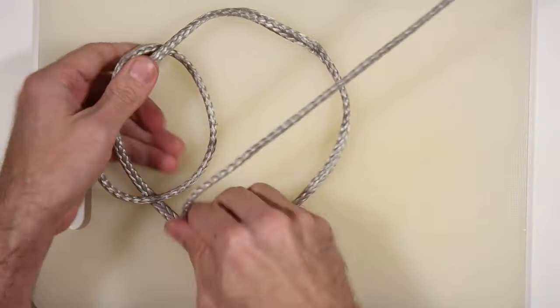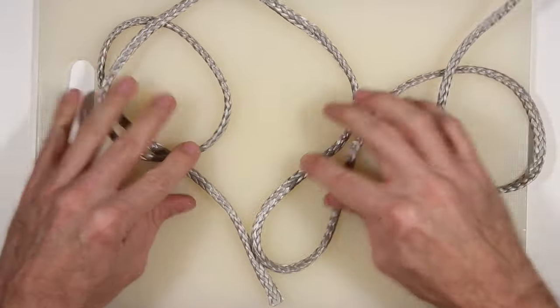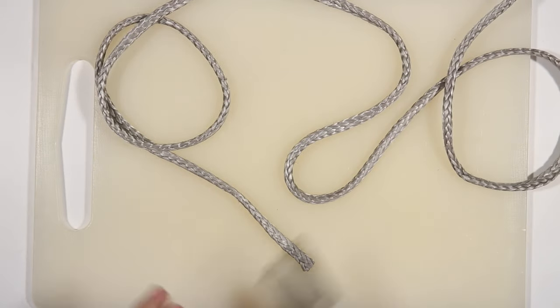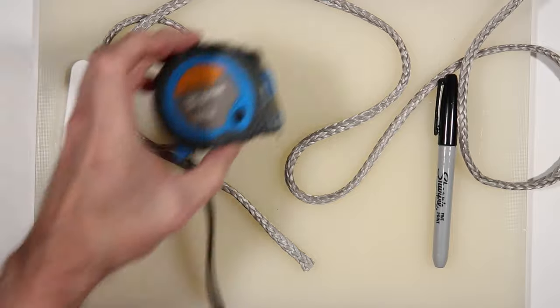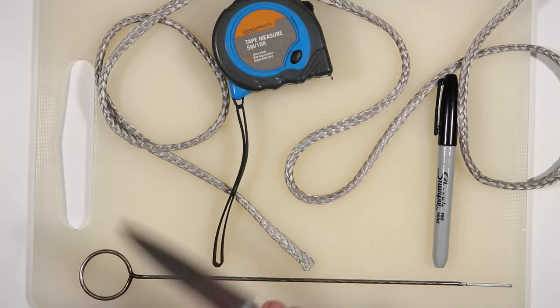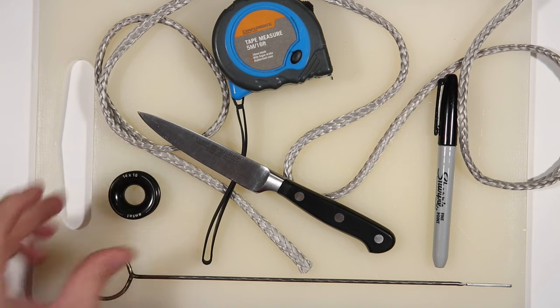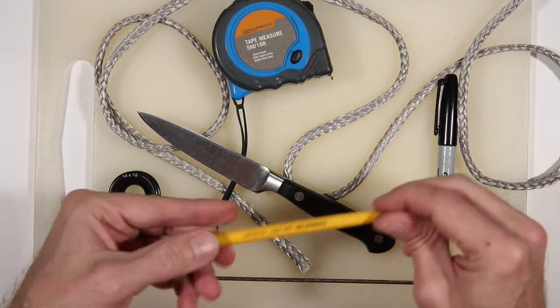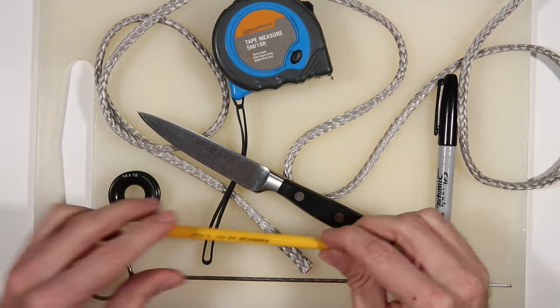In order to tie one, you will need some D12 Dyneema, a marker pen, a tape measure, a fid—this is a long needle fid—a sharp knife, and a low friction ring. If you've got Selma fids, these work well, but we're using the barrel of a pen.